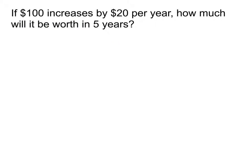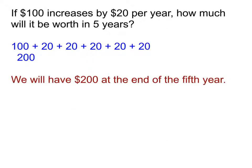We're choosing an arbitrary five years as our way to gauge how much this is going to end up being. So if I have $100 at the start, after one year I'm going to have 20 more than that — I add 20 to it. After the second year, I would add 20 to that, and basically I just keep adding 20 until I've done five. So we end up doing 100 plus five 20s, which gives us a total of 200.